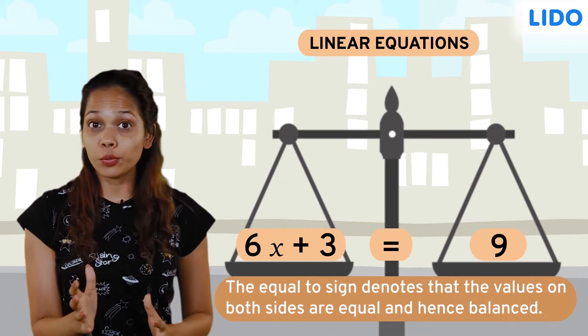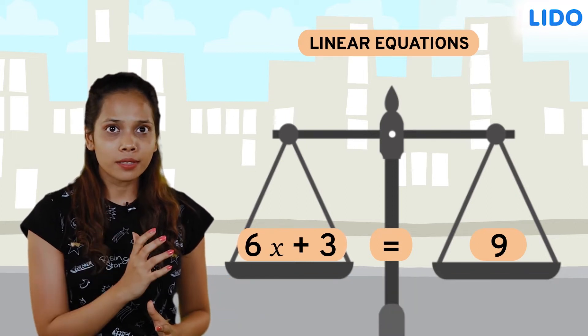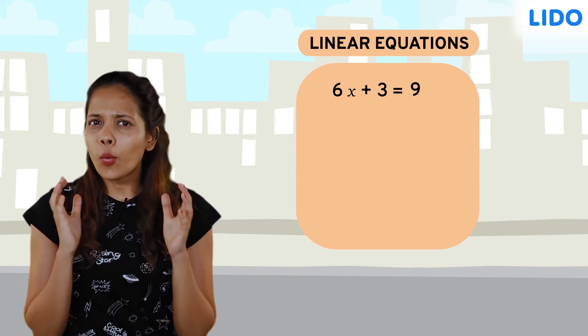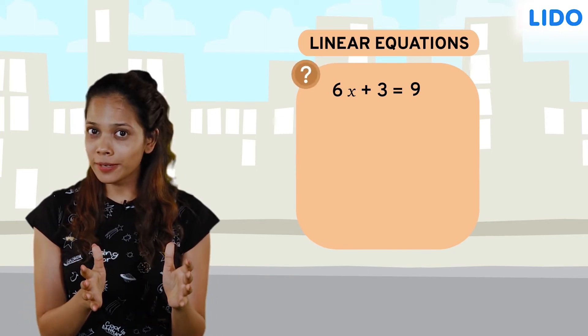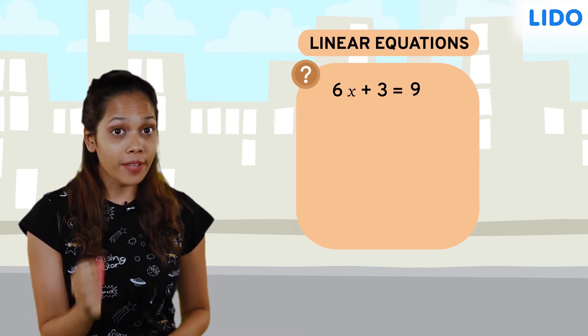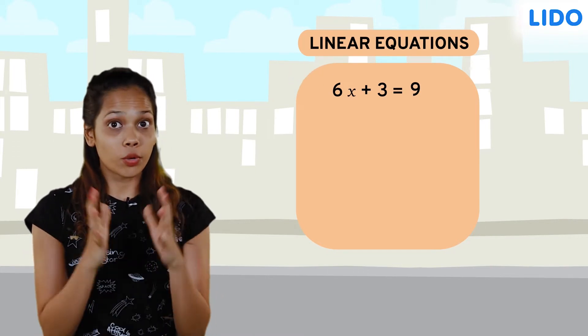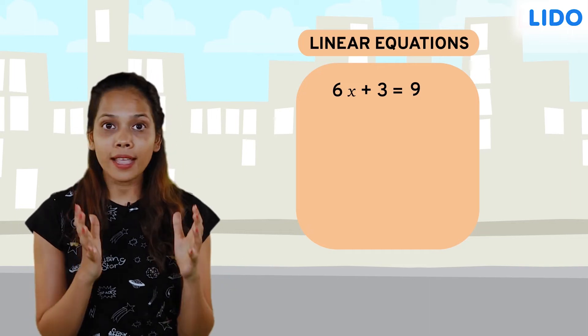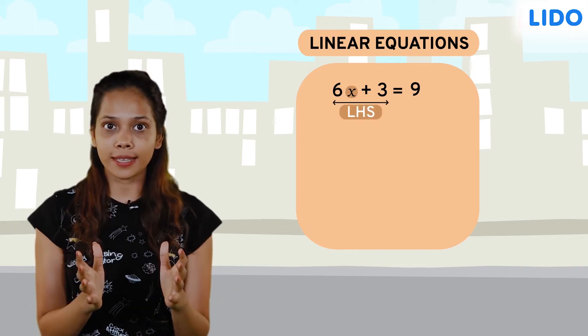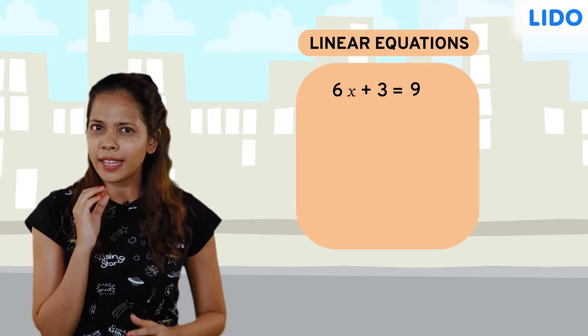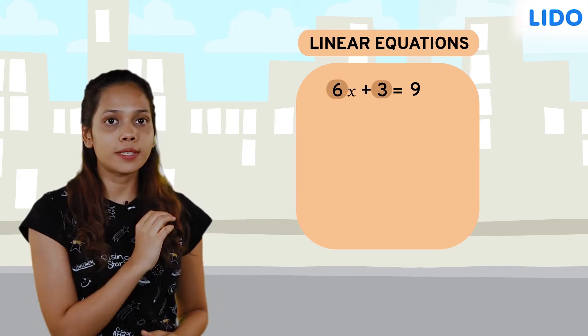Let's apply these rules of balancing or weighing balance to solve the equation 6x + 3 = 9. What do we mean by solving an equation? It means finding the value of the unknown for which the equality is true. So our objective is to isolate the unknown x on the left hand side, which means we should try to get rid of the numbers 6 and 3 without disturbing the balance.